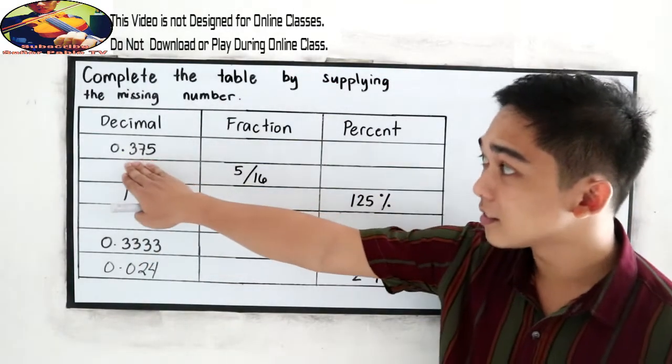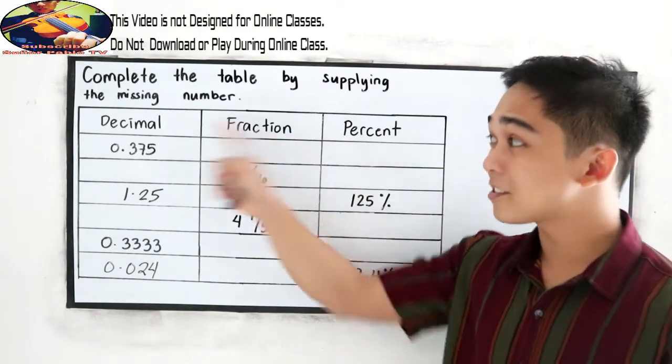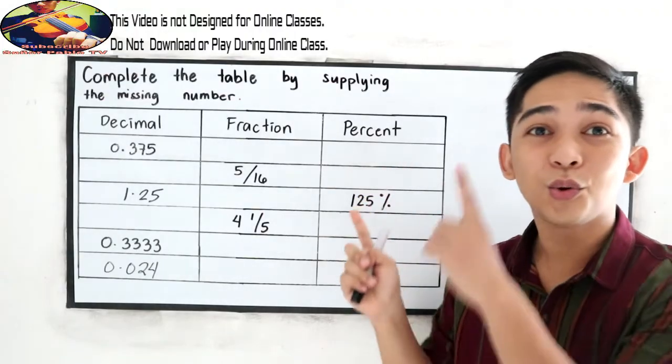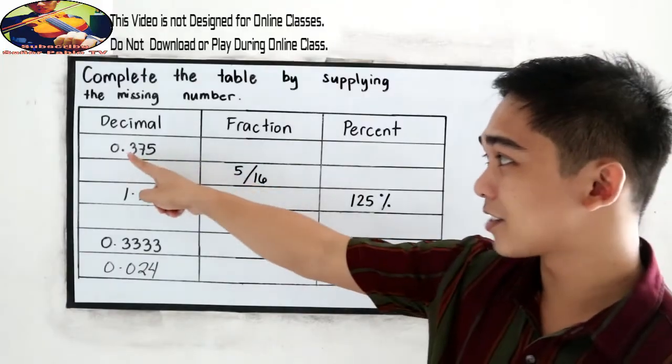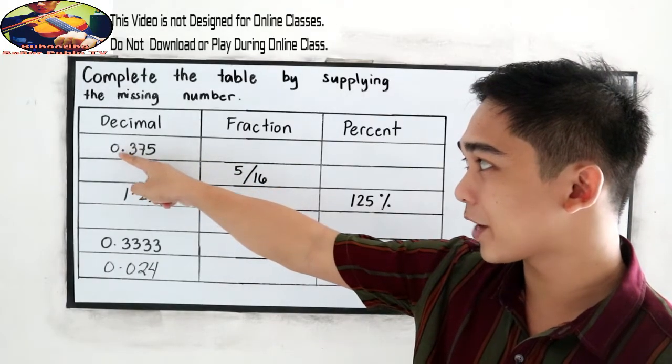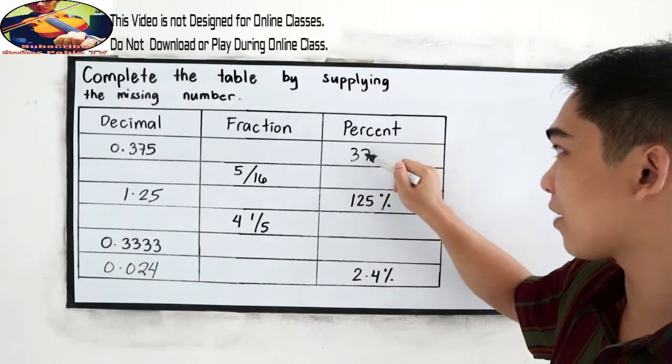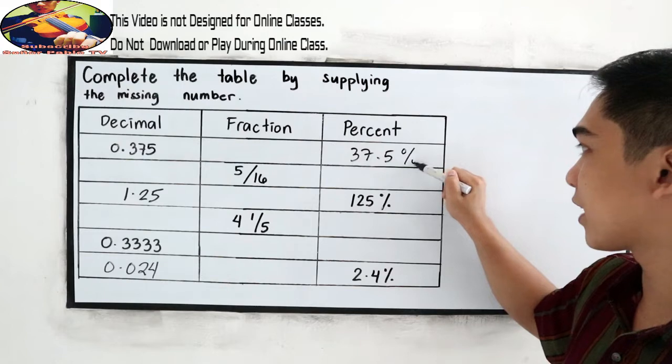Next, of course, decimal to percent. In decimal to percent, we're just going to move two decimal places. This time, going right. So example number one, two decimal going right. 1, 2. So that will become 37.5. Don't forget the percent symbol.